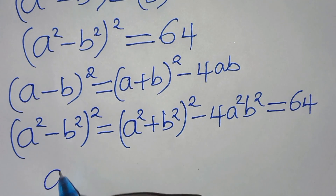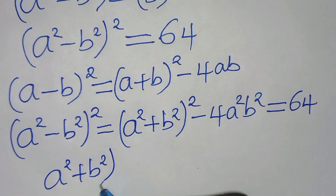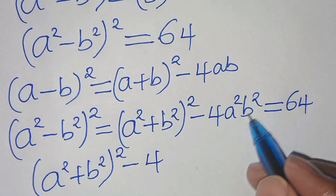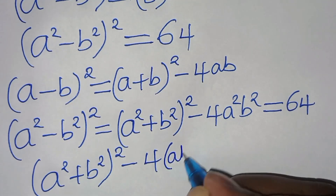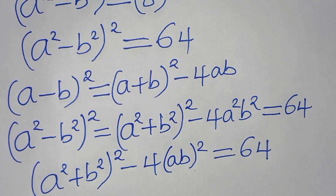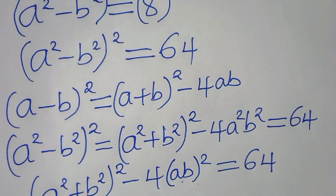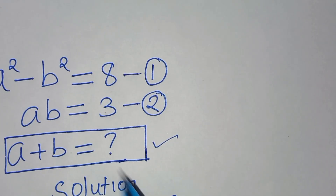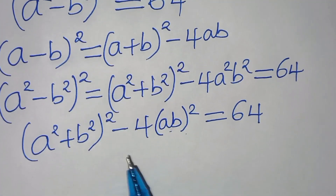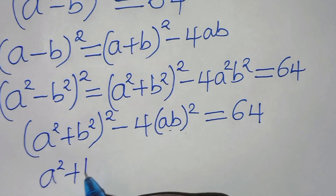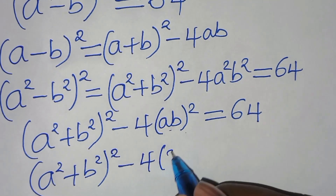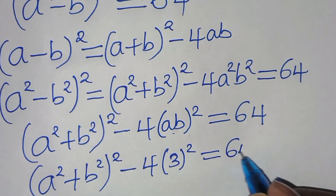We have a squared plus b squared, raised to power 2, minus 4 times (ab)² equals 64. Since a times b equals 3 from equation 2, we substitute to get a squared plus b squared, raised to power 2, minus 4 times 3 squared, equal to 64.